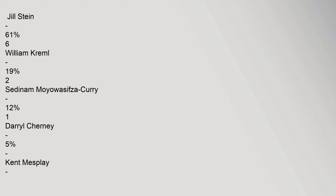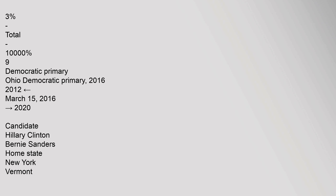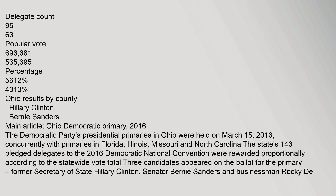Ohio Green Party Presidential Convention results, April 3, 2016: Jill Stein received 61% and 6 national delegates; William Kreml received 19% and 2 delegates; Sedinam Moyawassiza Curry received 12% and 1 delegate; Daryl Cherney received 5%; Kent Mesplay received 3%. Total: 9 national delegates.